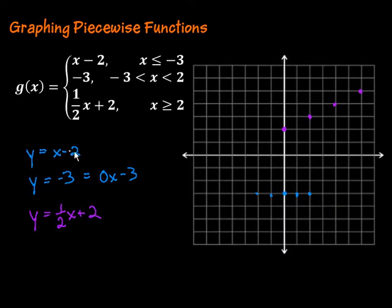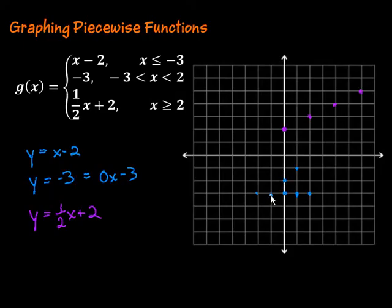For the first piece, y equals x minus 2, we start at the y-intercept of negative 2. The slope is 1, so that takes us up 1 over 1, or down 1 over 1 in the other direction. Be careful not to mix up your lines here.